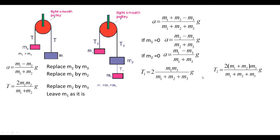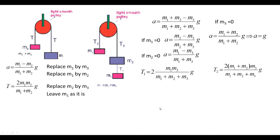Making m3 equal to 0: the acceleration expression gives (m1 plus m2)/(m1 plus m2)·g, which equals g. This means the blocks m1 and m2 are in free fall, accelerating downward with acceleration equal to g, since there is no opposing weight on the other side. Correspondingly, m2 equals 0 in the two-block case gives the same free-fall result.